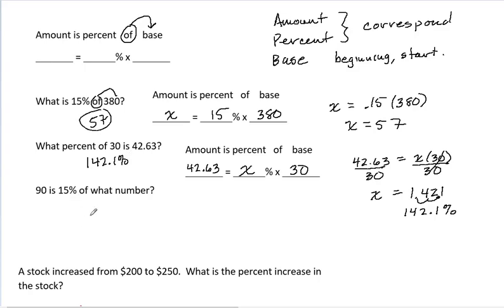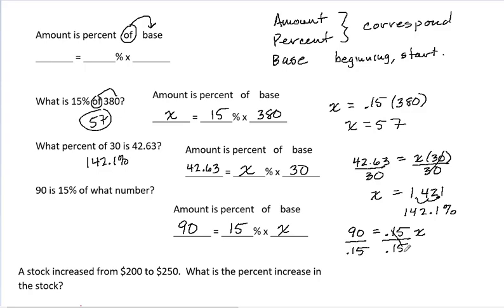90 is 15% of what number? 15 is the percent. I'm looking for the base. I've got the amount. So 90 is equal to 0.15 times x. I would want to divide. x is 600.